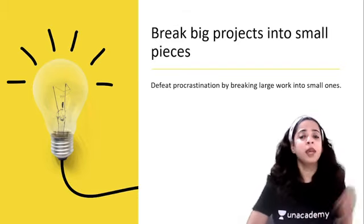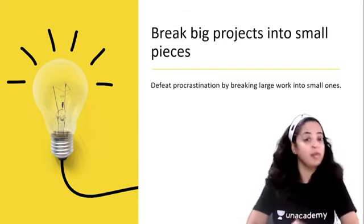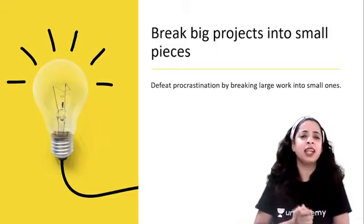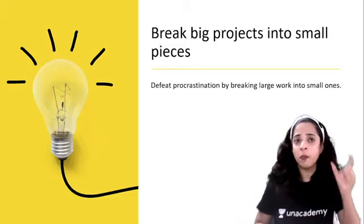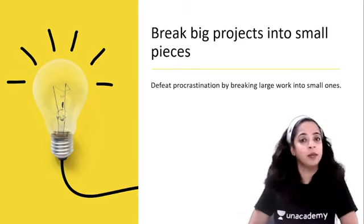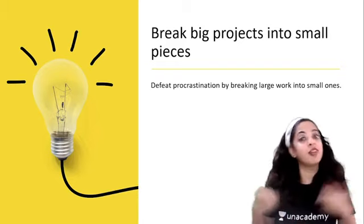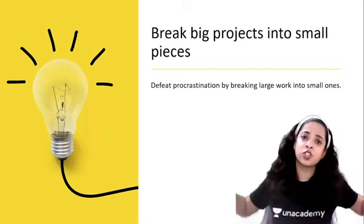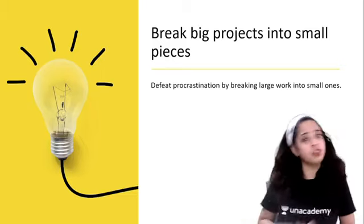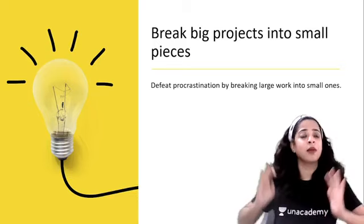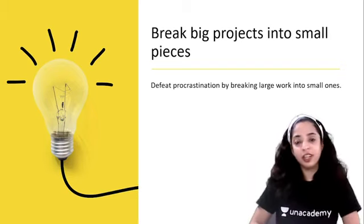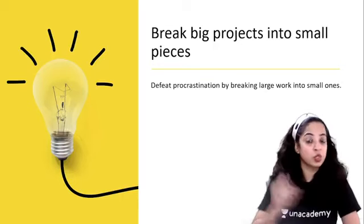Next, break big projects into small pieces. If you want to finish, say, a chemistry portion, break it into small portions. Decide that from 4 pm to 5 pm you will do only one topic of chemistry. When you finish that, you feel very good about it. Don't say you'll sit and complete the full chemistry portion in one go — break it into small projects throughout the day, or spread it over a week. You can defeat procrastination by breaking large work into small ones.